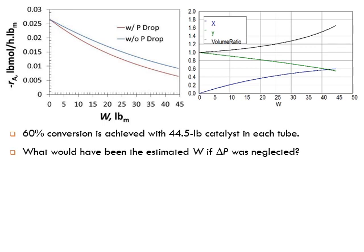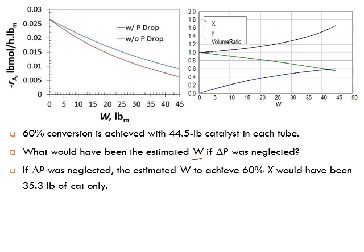What would the estimated W be if pressure drop was neglected? If you set alpha equal to zero — assuming no pressure drop — and calculate the mass of catalyst needed for 60% conversion, you find it's only 35 pounds. So you might think you only need 35 pounds, but that's because you neglected the pressure drop. You then load only 35 pounds instead of the correct 44.5 pounds.